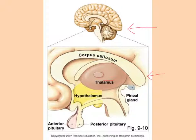Here is the corpus callosum again in a stylized view — all of those axons of nerves traveling from the right and left hemispheres back and forth to allow communication between the two halves of your brain.